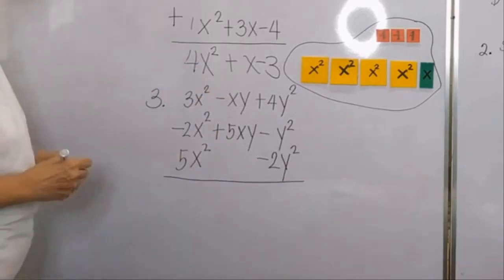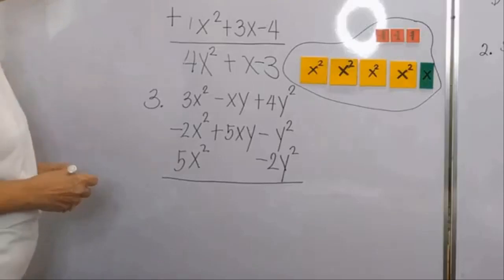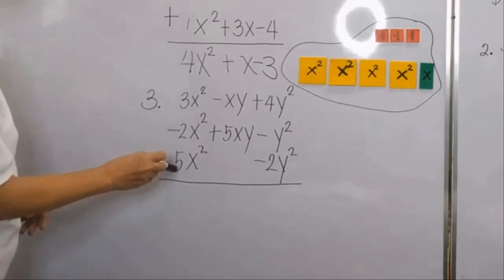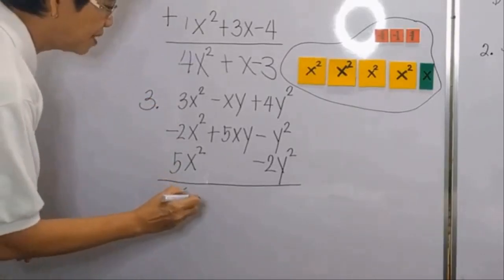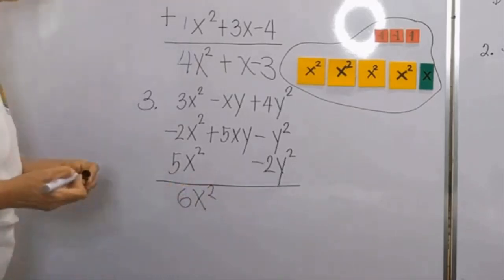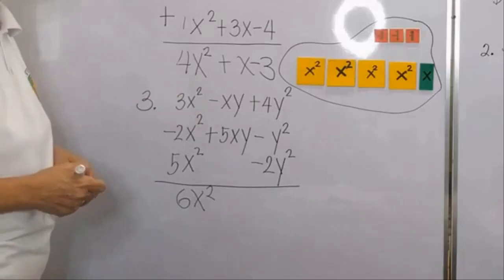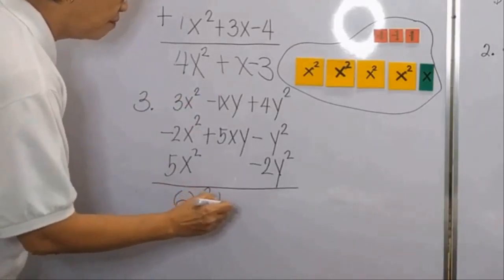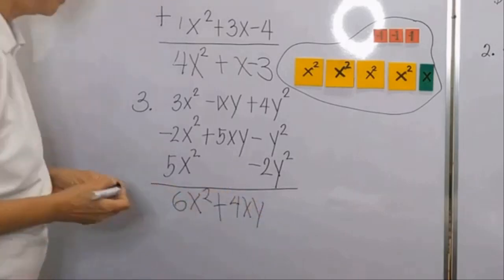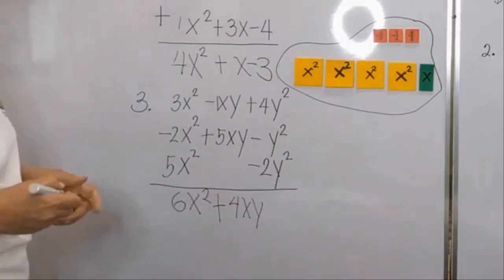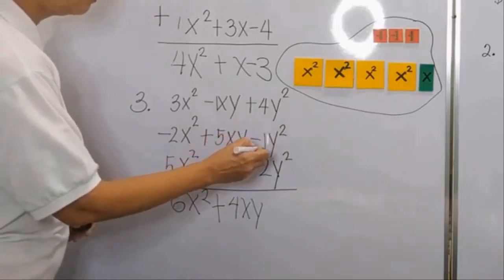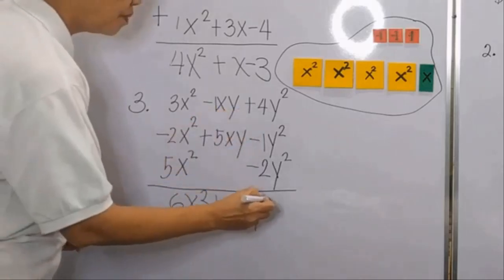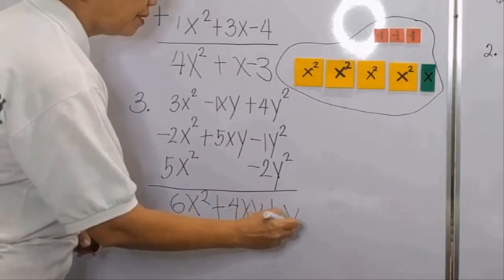So you will only add all the y squared, all the x squared, and all the xy's. First, add the numerical coefficients: 3 plus 5 minus 2. So 3 plus 5 is 8, minus 2 gives positive 6x squared. Then for xy, with coefficient understood as 1, you have positive 4xy. And negative 3 plus 4 is equal to positive 1y squared.